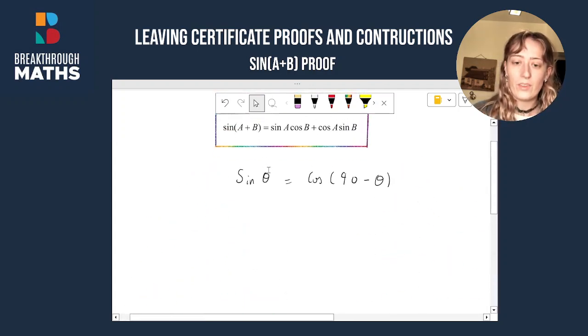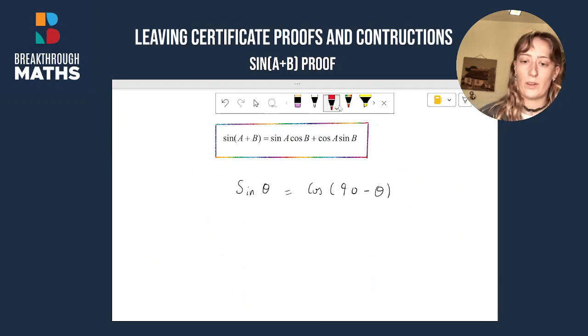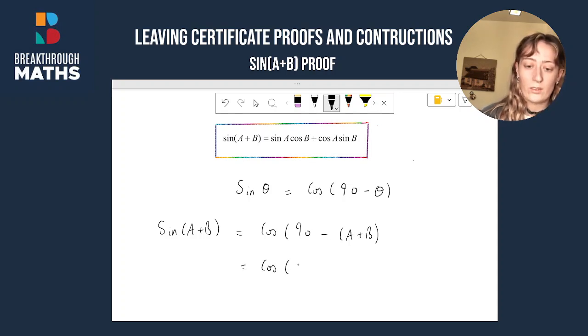Okay, so let's use this fact to prove this formula. So sine a plus b we can therefore rewrite as equaling cos of 90 minus a plus b. Now, moving out that bracket we end up with cos of 90 minus a minus b and then adding in our own bracket around 90 minus a.